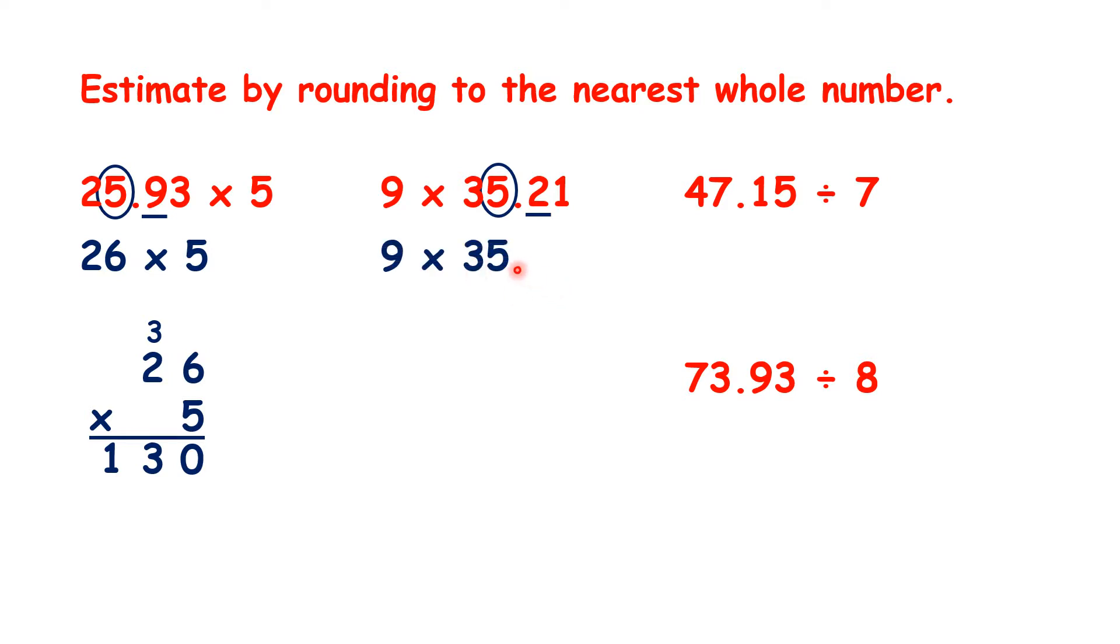So to estimate our answer, we can work out 9 times 35. Using column multiplication, we get 315.